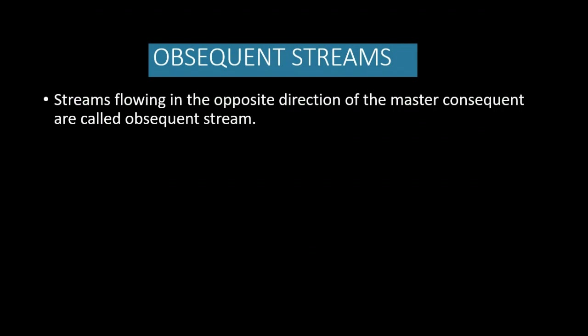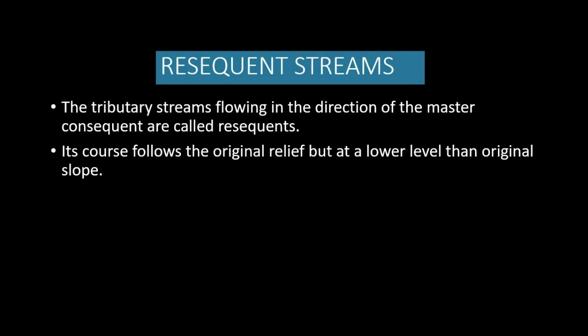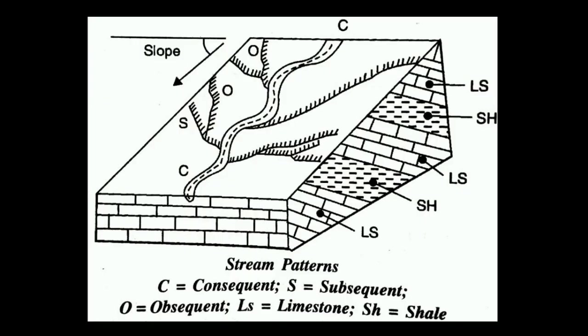Let's talk about obsequent streams. Streams flowing in the opposite direction of the master consequent are called obsequent streams. As an example, the Koshi River runs east to west as an obsequent stream, because it flows opposite to the direction of master consequent streams like the Ganga or Yamuna.